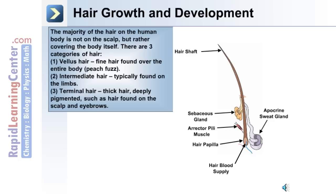The three categories of hair are: number one, vellus hair — this is fine hair found over the entire body, also called peach fuzz. Number two is intermediate hair, typically found on the limbs. And number three is terminal hair — this is thick, deeply pigmented hair, such as the hair on the scalp and eyebrows.